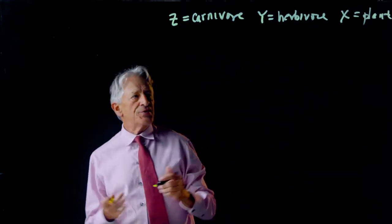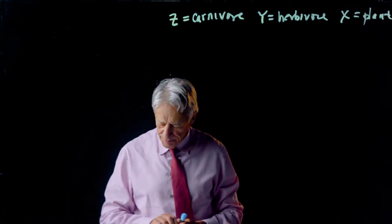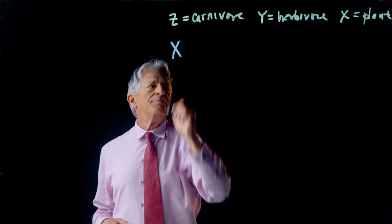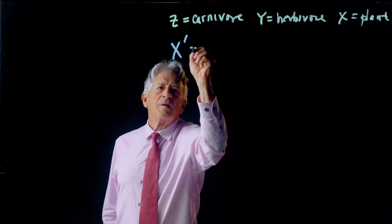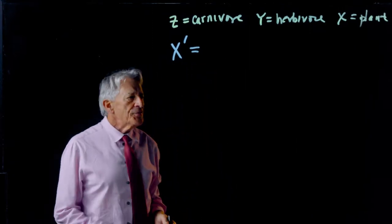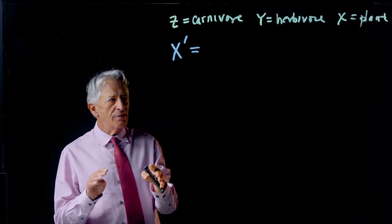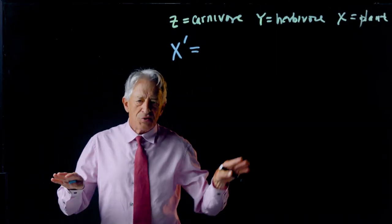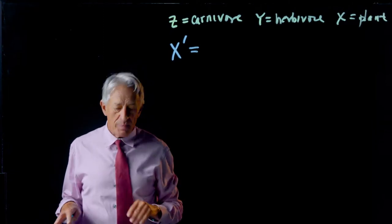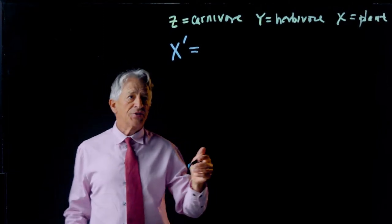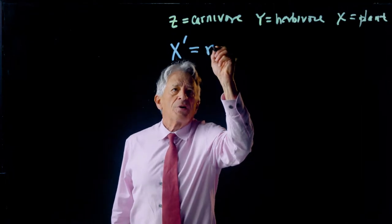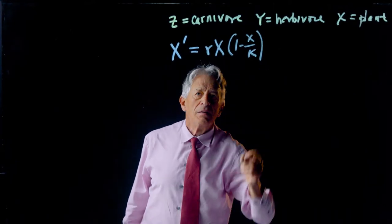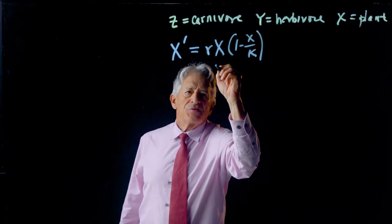So let's make a differential equation. Let's start with the X variable, the plants. So the first thing we're going to assume is that the plants, in the absence of the herbivore, grow to a saturation, to a carrying capacity, and are limited by that. So we're going to have an RX times one minus X over K. And that is plant growth.